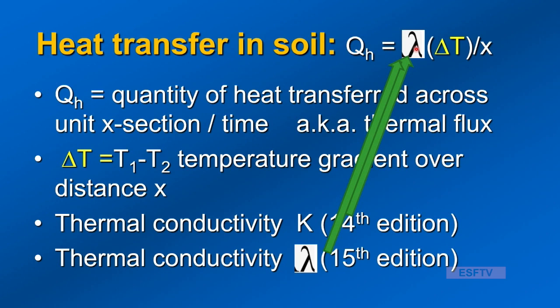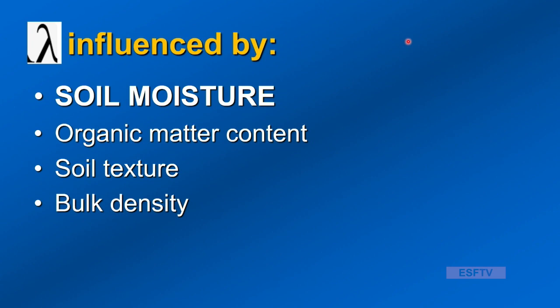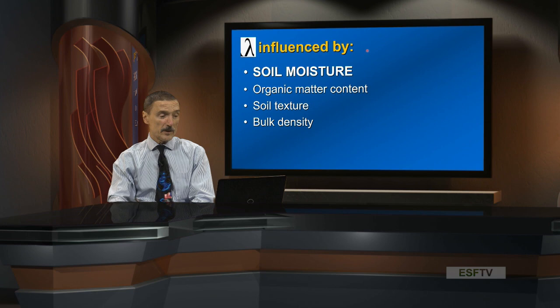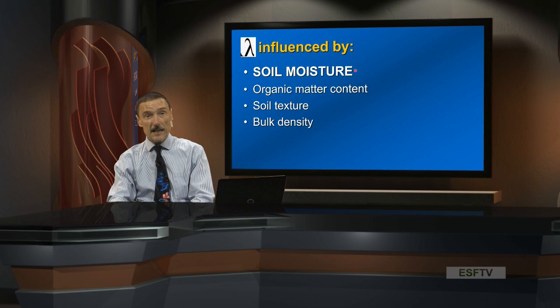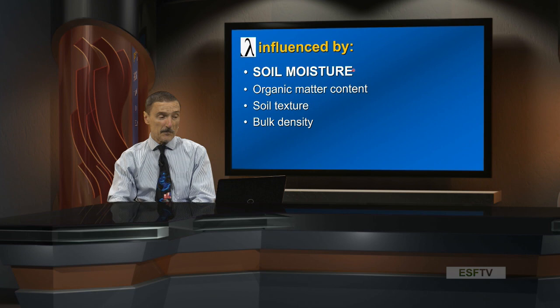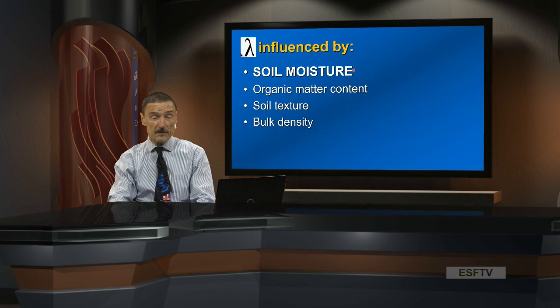In the 15th edition of Weil and Brady, this is expressed as lambda; in the older edition it was K — you'll see both. Lambda expresses a flux, a rate. The number one factor influencing lambda, thermal conductivity, is soil moisture — that's the numero uno factor. Once we account for moisture, other factors include organic matter content, soil texture, and bulk density — very similar to the things that affect water flow.